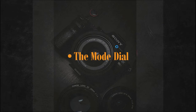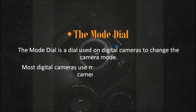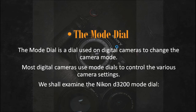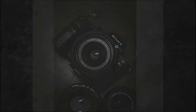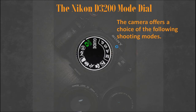All cameras have one major part called the mode dial. When you understand the mode dial you will be able to manage and control your camera. The mode dial is a dial used in digital cameras to change the camera mode and different camera settings — you can either manipulate the settings on your own, allow the camera to manipulate them for you, or do some part while the camera does another. We shall examine the mode dial of the Nikon D300 in this class.